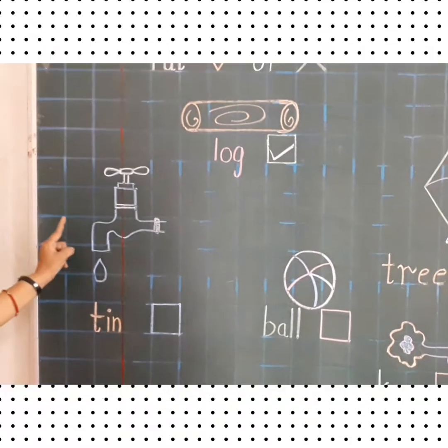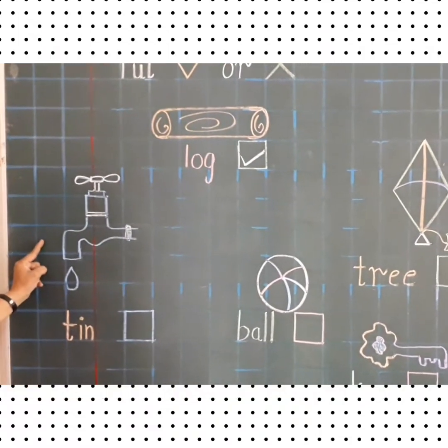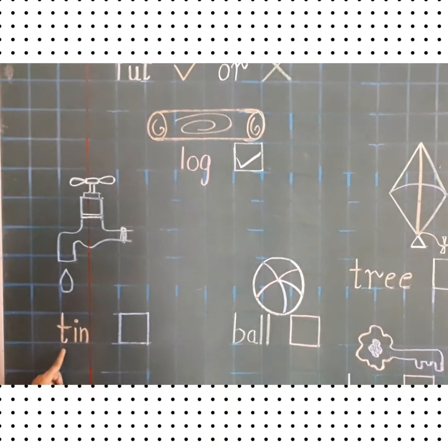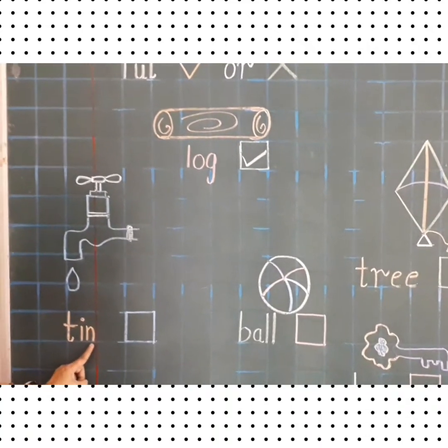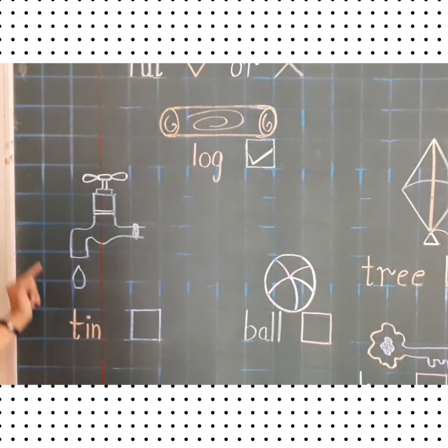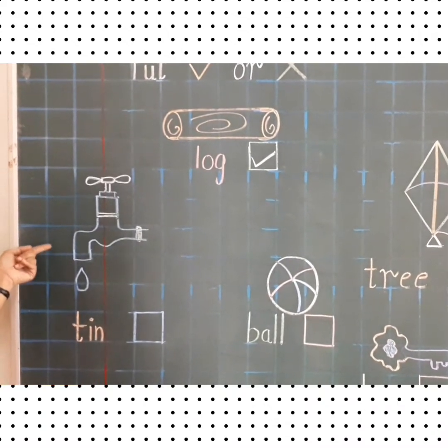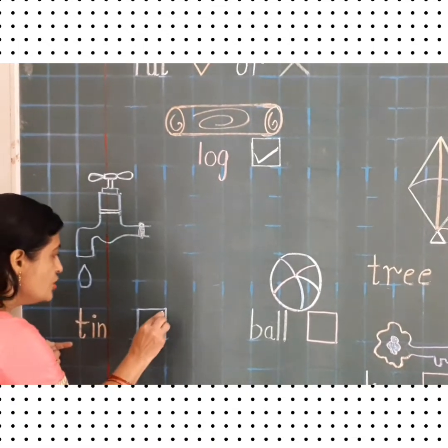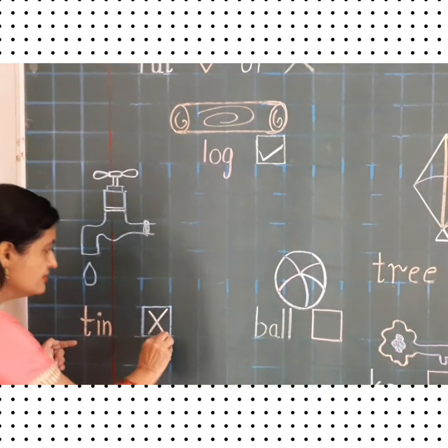Now the next one. This is, what is this? A tap. And let's read the spelling. T-I-N. What we have to pronounce T-I-N? Tin. And this is tap. So it does not match with the spelling. So we will put cross. Here. Understood?